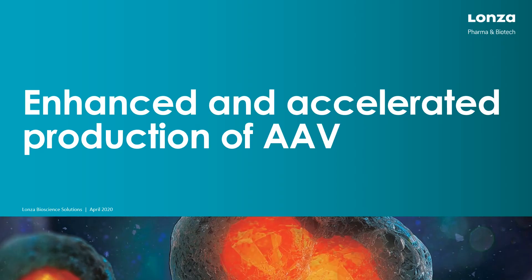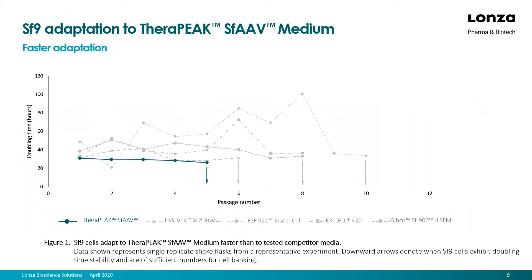I would like to review how Therapeak SFAAV medium can help in the different steps of the AAV production process. First, we looked at the adaptability of SF9 cells from Grace's medium to five different media, as indicated in the legend of the graphic. We decided to create a master cell bank when the doubling time from one passage to another stabilized, identified by the downward arrows. With Therapeak SFAAV medium, we were able to create our master cell bank in five passages. However, with other media tested, it took between six and ten passages before the cells adapted to the new medium.